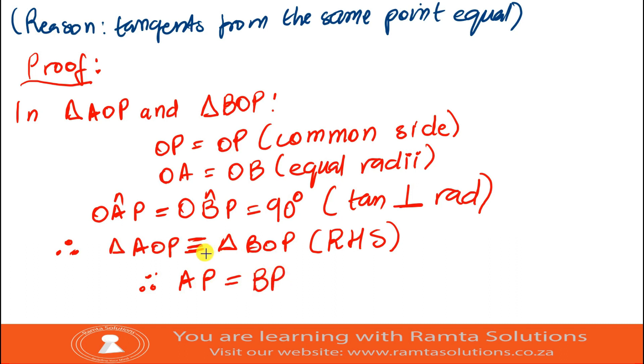Remember, guys, when we talk congruency, we're saying, corresponding sides are equal, corresponding angles are equal. Let's see. AP is equal to BP. Let's confirm, if they are corresponding.